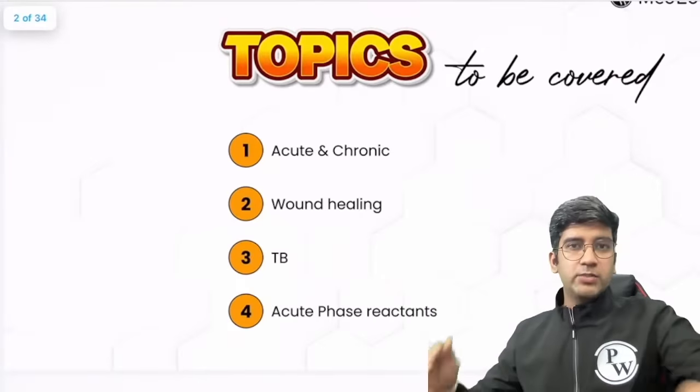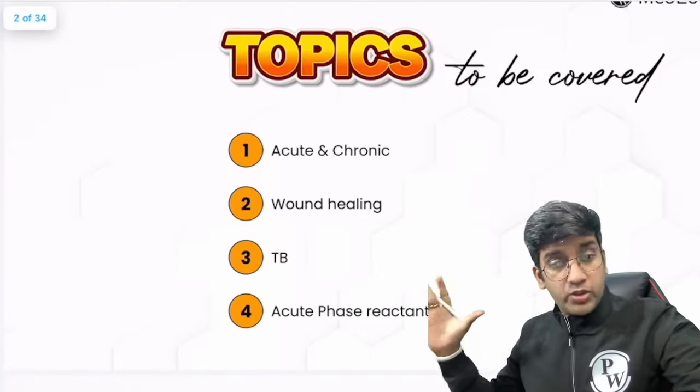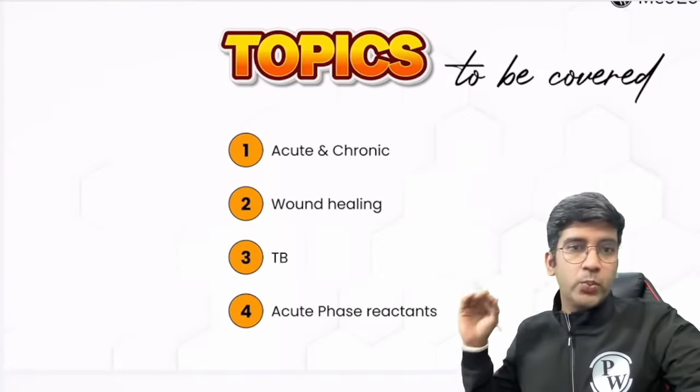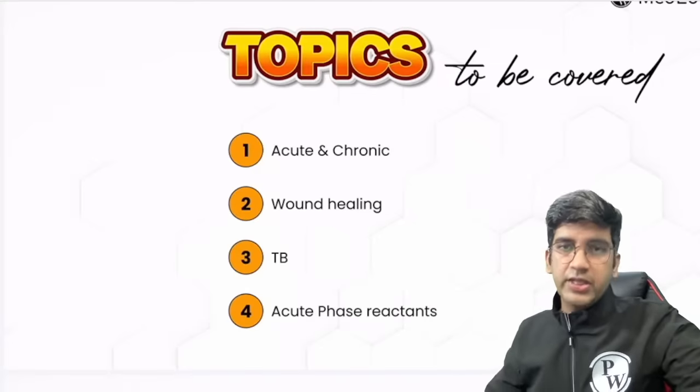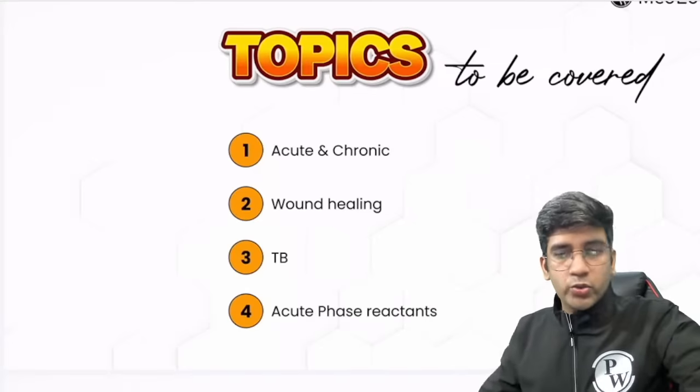What we are going to talk today is about acute inflammation, chronic inflammation, wound healing, tuberculosis, and a little bit about acute phase reactants. This will be the overview. I am going to do the same thing we did for the first chapter — cell injury and adaptation — giving an overview of what questions can probably come in acute and chronic inflammation as well as the infarction chapter.